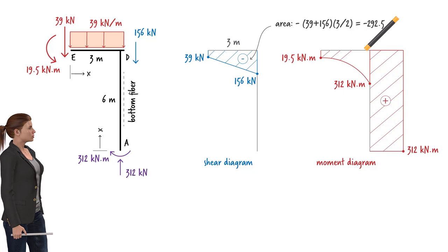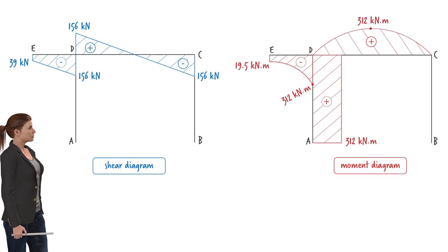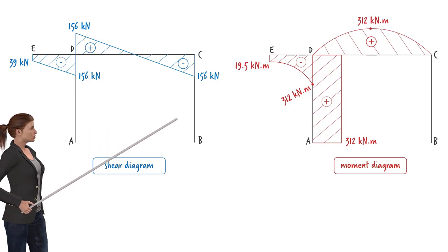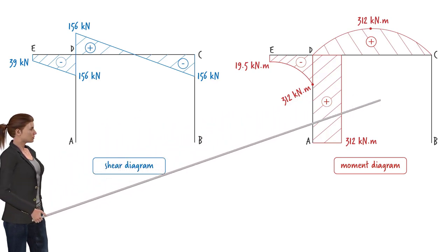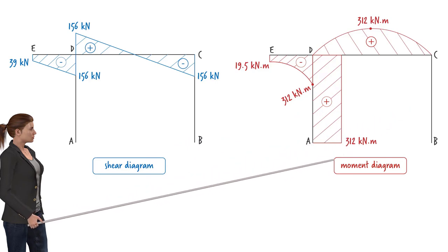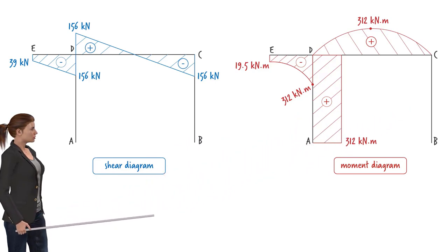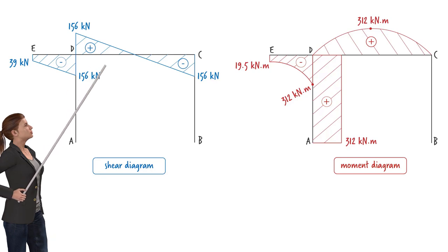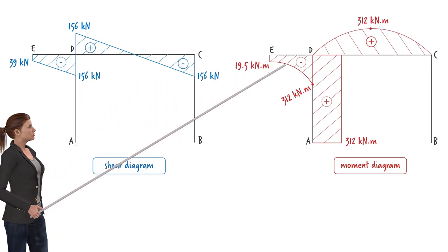Now that we have drawn the shear and moment diagrams for the three segments of the frame, let's put them together to show the diagrams in one place. As you can see, the diagrams indicate that the two columns don't carry any shear force, and the right column does not carry any bending moment. Bending moment in column AD is constant, and since the beam is subjected to a uniformly distributed load, shear varies linearly in both segments, resulting in non-linear bending moment diagrams.